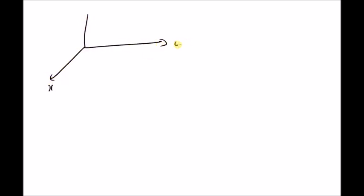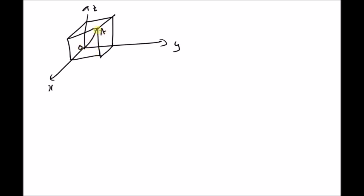This is the x-axis, this is the y-axis, and this is the z-axis. We have the cube with side length equal to 1. We want to find the angle between the vector OA — that is, the body diagonal between the origin O and point A — and the diagonal between the two corners B and C. This is B, this is C. So we want to find the angle between OA and BC.